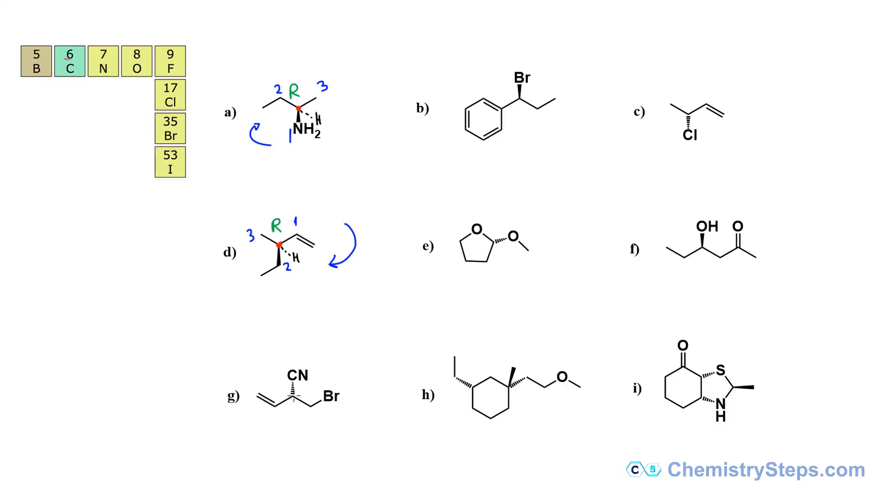And the second one, so this is the chiral center and we are comparing three carbons. So again, the hydrogen here, this time the hydrogen is a wedge, it's pointing towards us. And the three carbons, so here is a carbon connected to bromine, is a carbon connected to nitrogen, is a carbon connected to two carbons. So the one connected to the bromine gets the first priority.